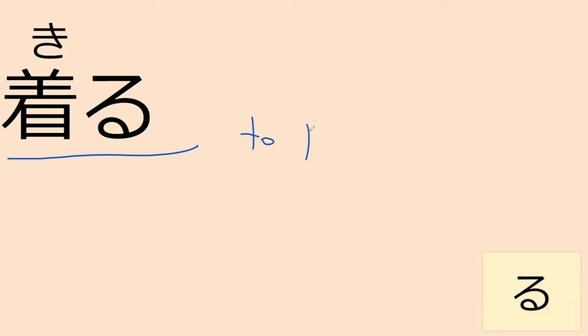So our next verb is 着る, which means to put on clothes. This is the generic verb for putting on clothes. In Japanese there are a lot of different ways to describe putting on clothes with different verbs, but 着る is the generic one — if you can't remember the specific one, you can use 着る. There are very specific verbs depending on whether you're putting on a cloak, pants, glasses, etc.